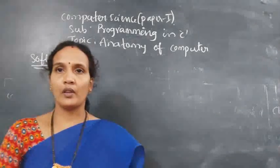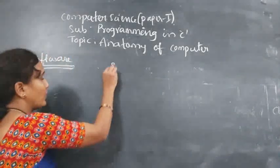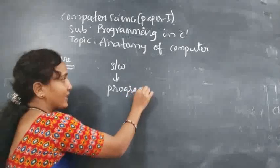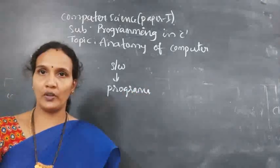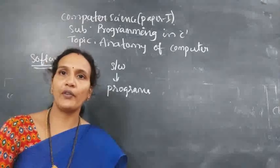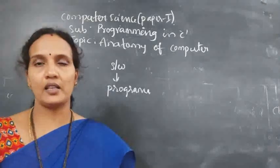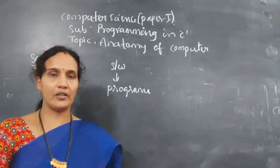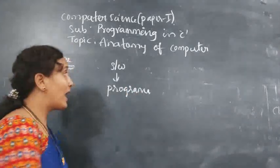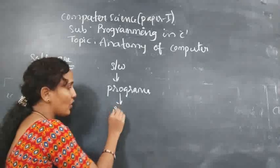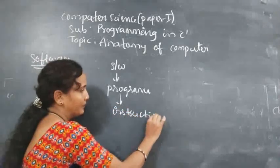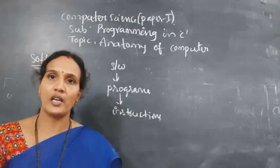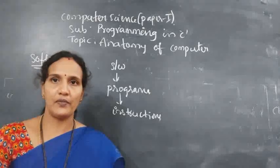Software is a set of programs which are designed to perform a specific task. Every program is a collection of instructions. So software is a set of programs, and every program is a set of instructions designed to perform a specific task.